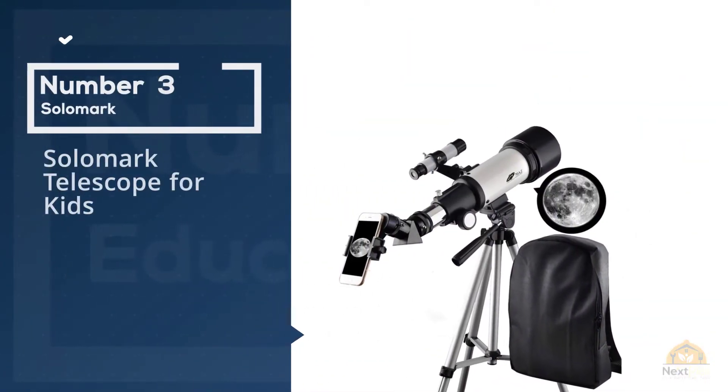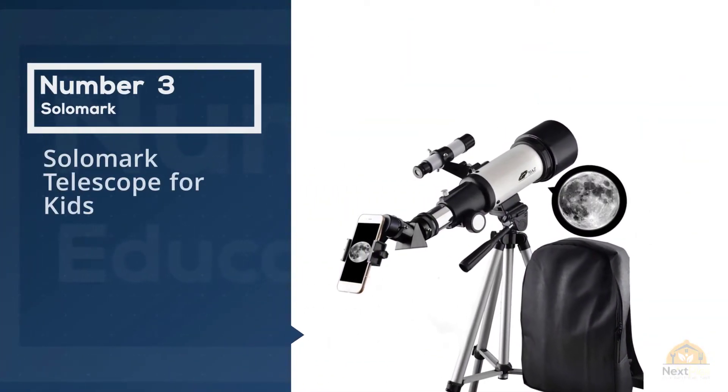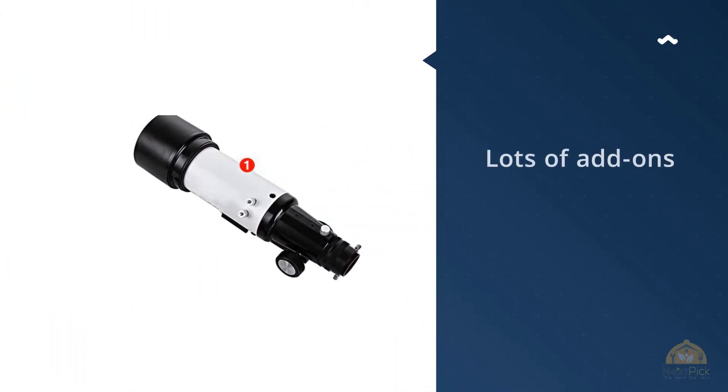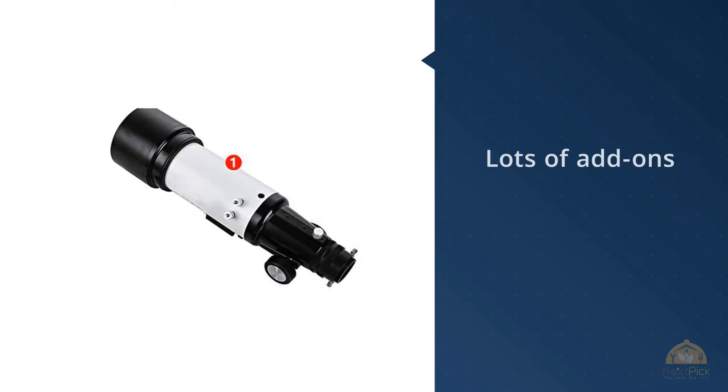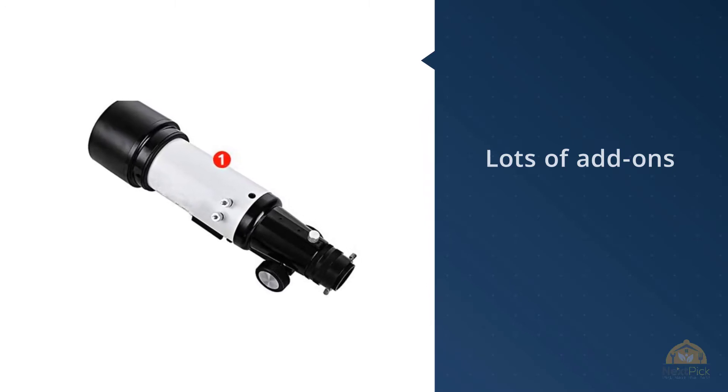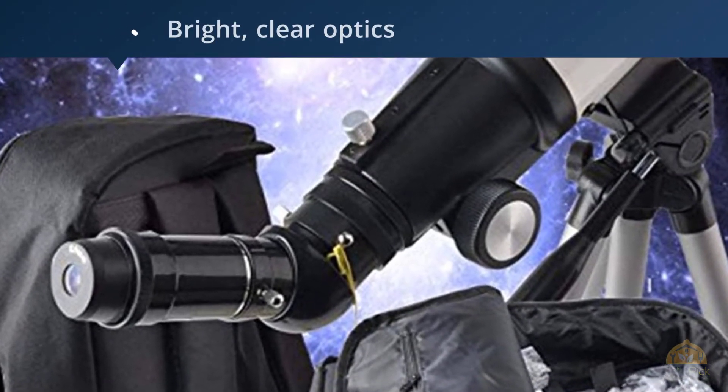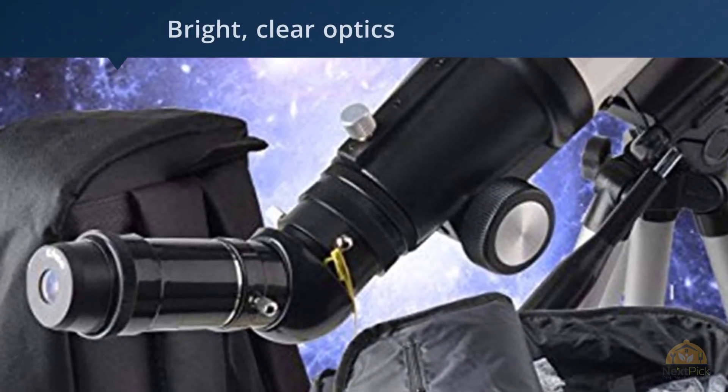Number three: Solomark telescope for kids. As for what your child can do with all of these pieces, it depends on their particular interests. For the kid that likes stargazing, it's easy to set up the 9 millimeter or 20 millimeter eyepiece for nighttime observation. If they want to see animals on safari, they can use the Barlow lens to get up close and personal.